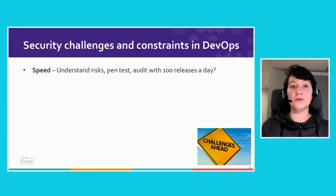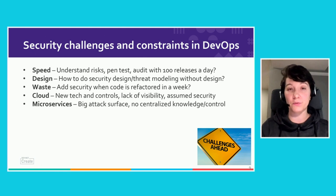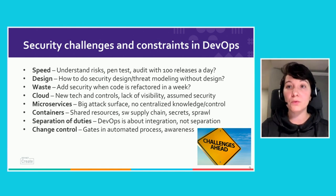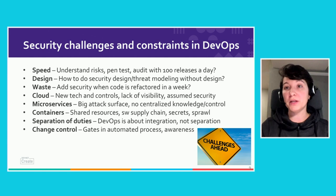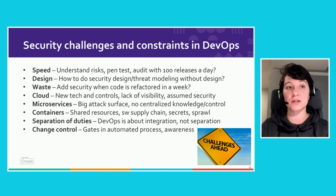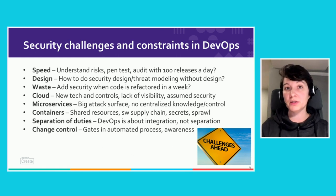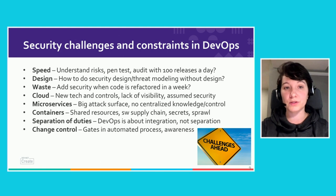What are the main security challenges and constraints with security being embedded in DevOps? First and foremost, that's speed. How will you be able to do risk assessments and penetration tests when the application you are trying to assess changes 100 times a day? How do you do threat modeling if you don't have a stable design because of the agile approach being used? Cloud introduces additional complexity, and complexity is the enemy of security. The separation of duties needed for security measures is also not common in a DevOps environment, and all of that challenges how these automated processes are being controlled.